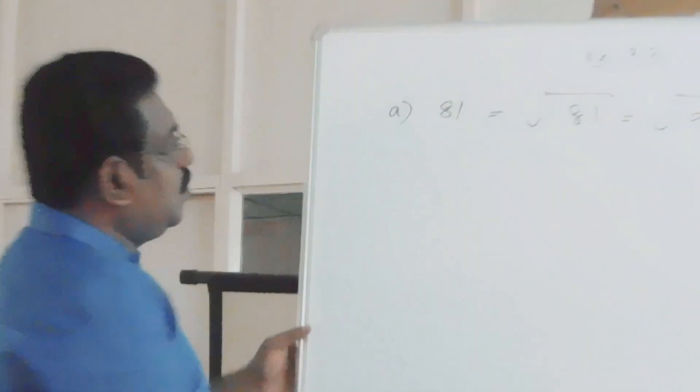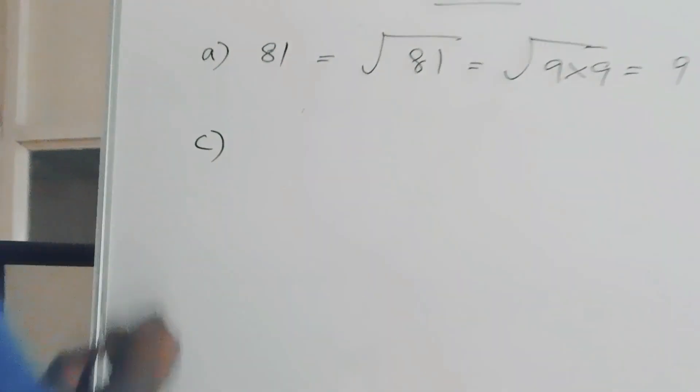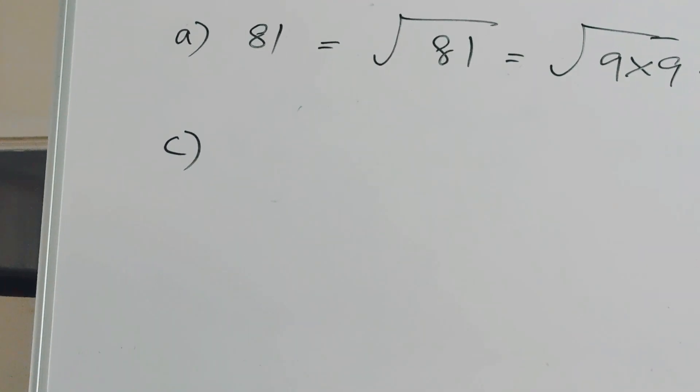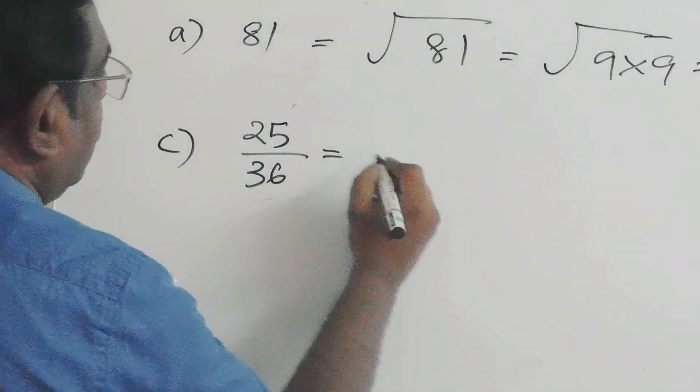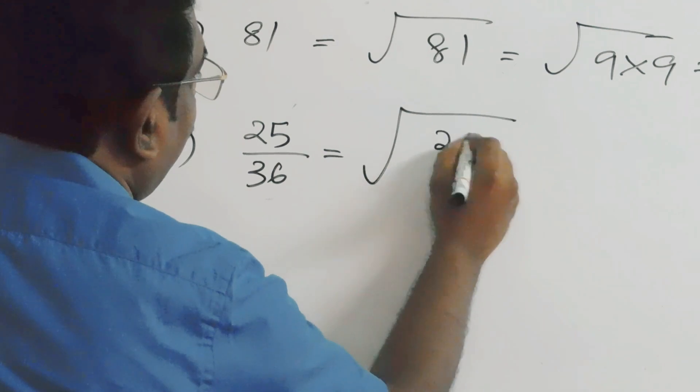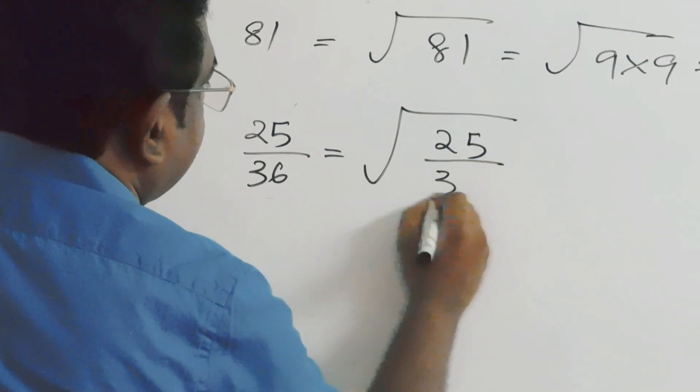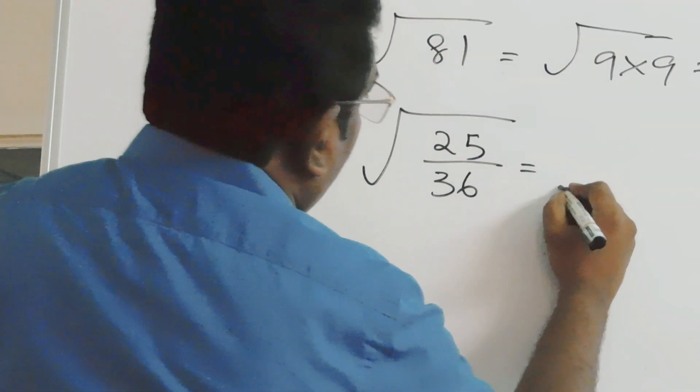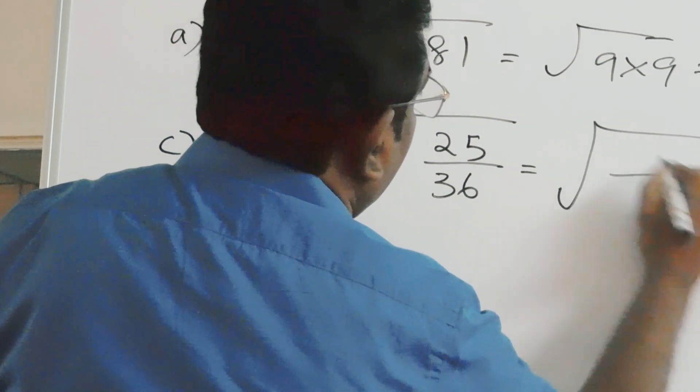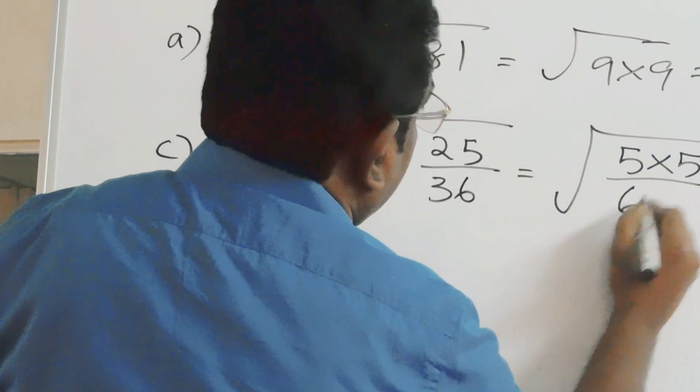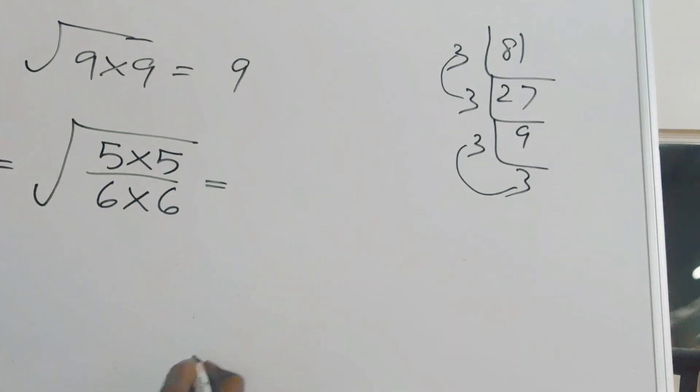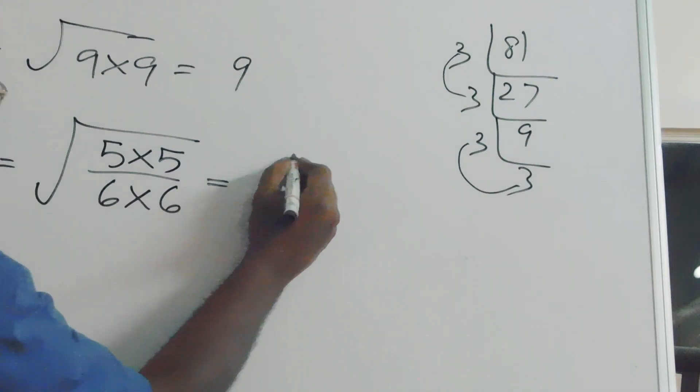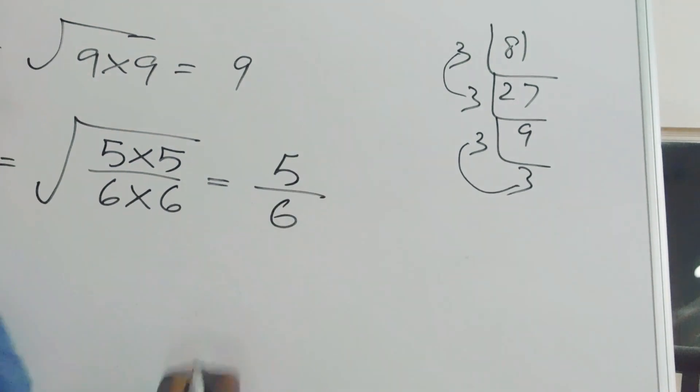Now we will solve question number c, square root of 25 by 36. We can write 5 into 5 by 6 times 6. Therefore, the square root of 25 by 36 equals 5 by 6.